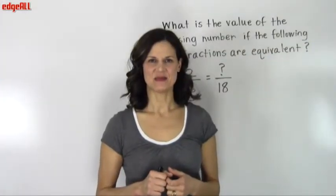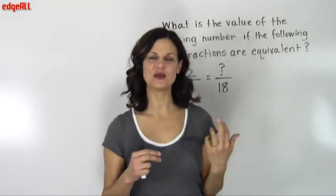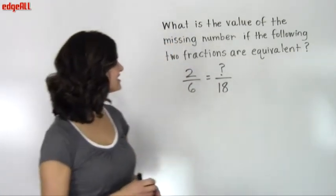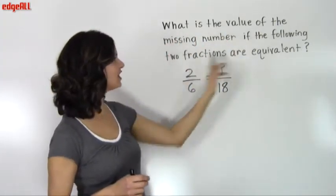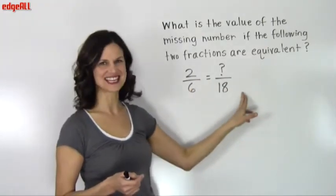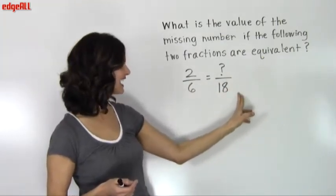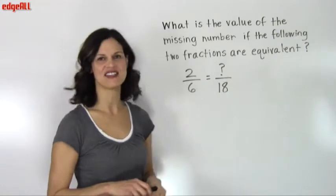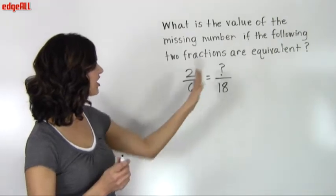Let's look at another example. Sometimes you will be given two equivalent fractions and you'll be asked to find the numerator or denominator of one of the fractions. So let's look at this example. It says: what is the value of the missing number if the following two fractions are equivalent? I've got two fractions here: 2 over 6 and some number over 18. We've got a missing number — we don't know what the numerator is of this second fraction. But we do know that these two fractions are equivalent.